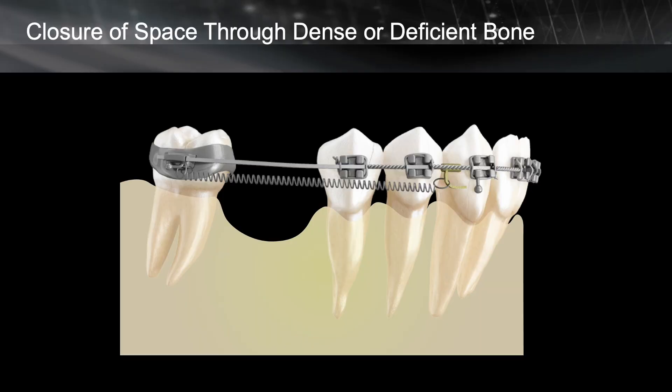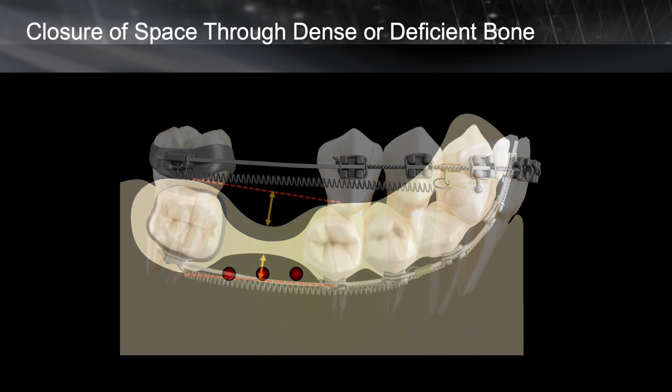You can also cause root resorption. By application of MOP, you can increase the rate of bone remodeling in that area and therefore provide a better quality of bone for movement of the tooth. It not only increases the rate of movement, but also improves the type of tooth movement — you will have more bodily movement than just tilting.